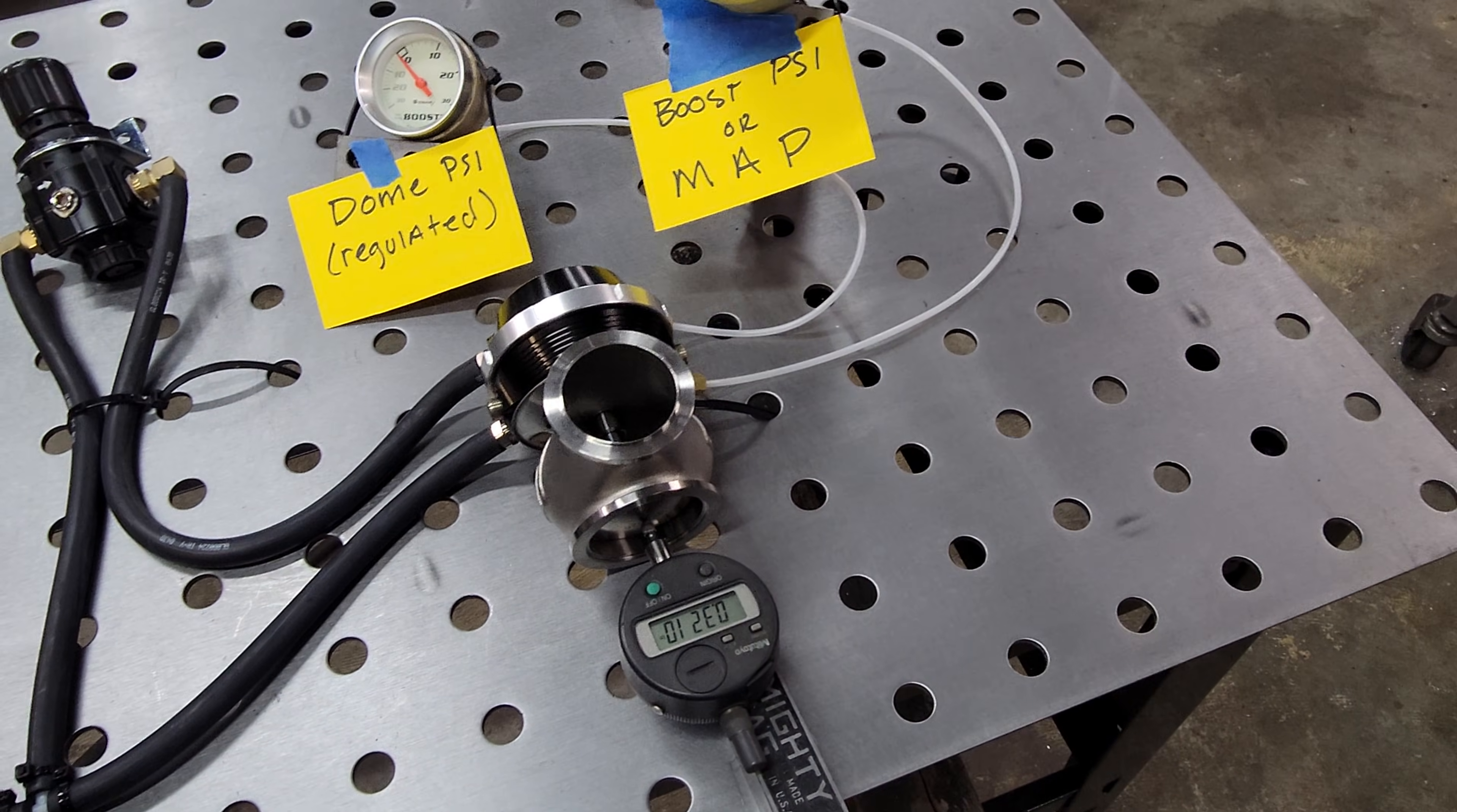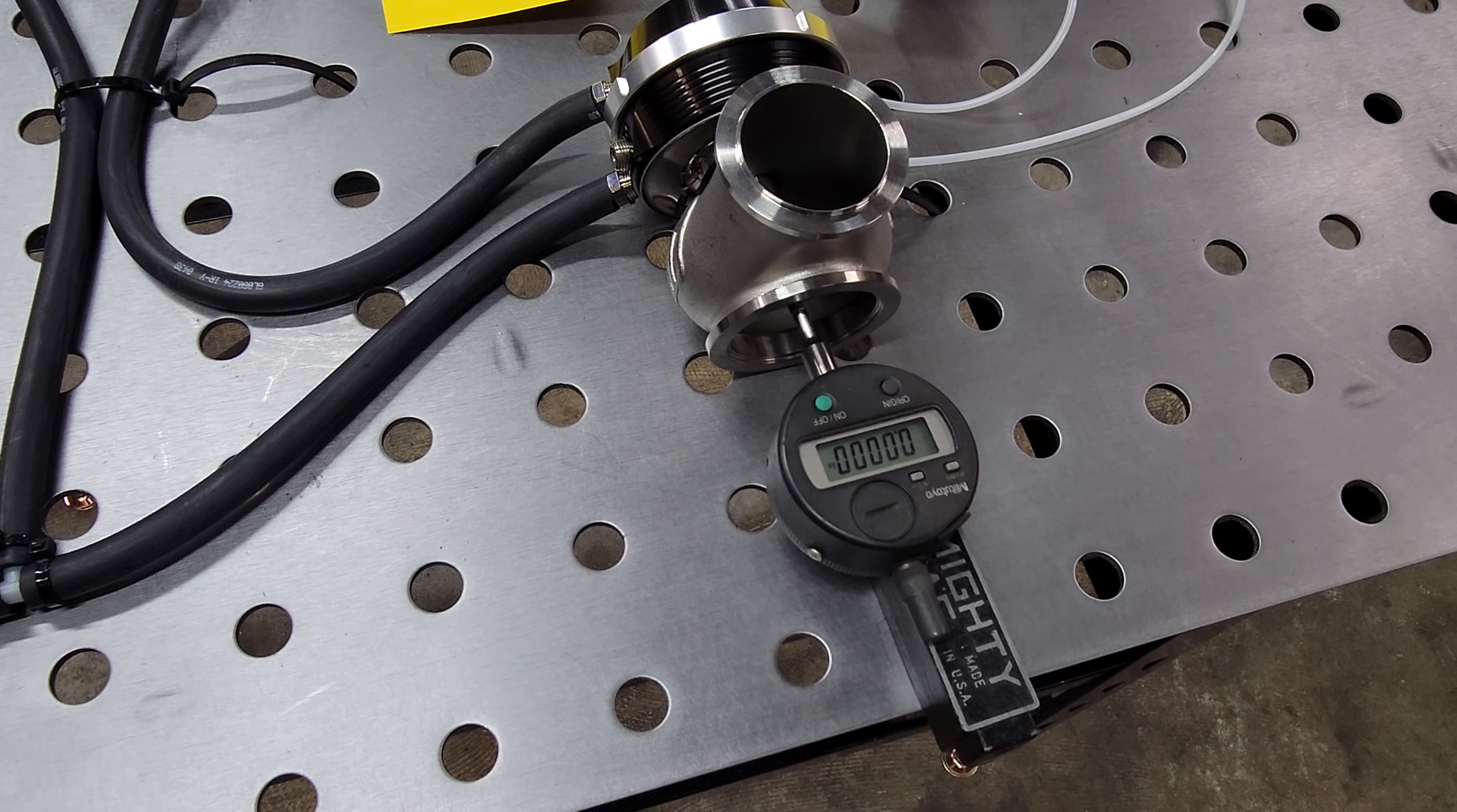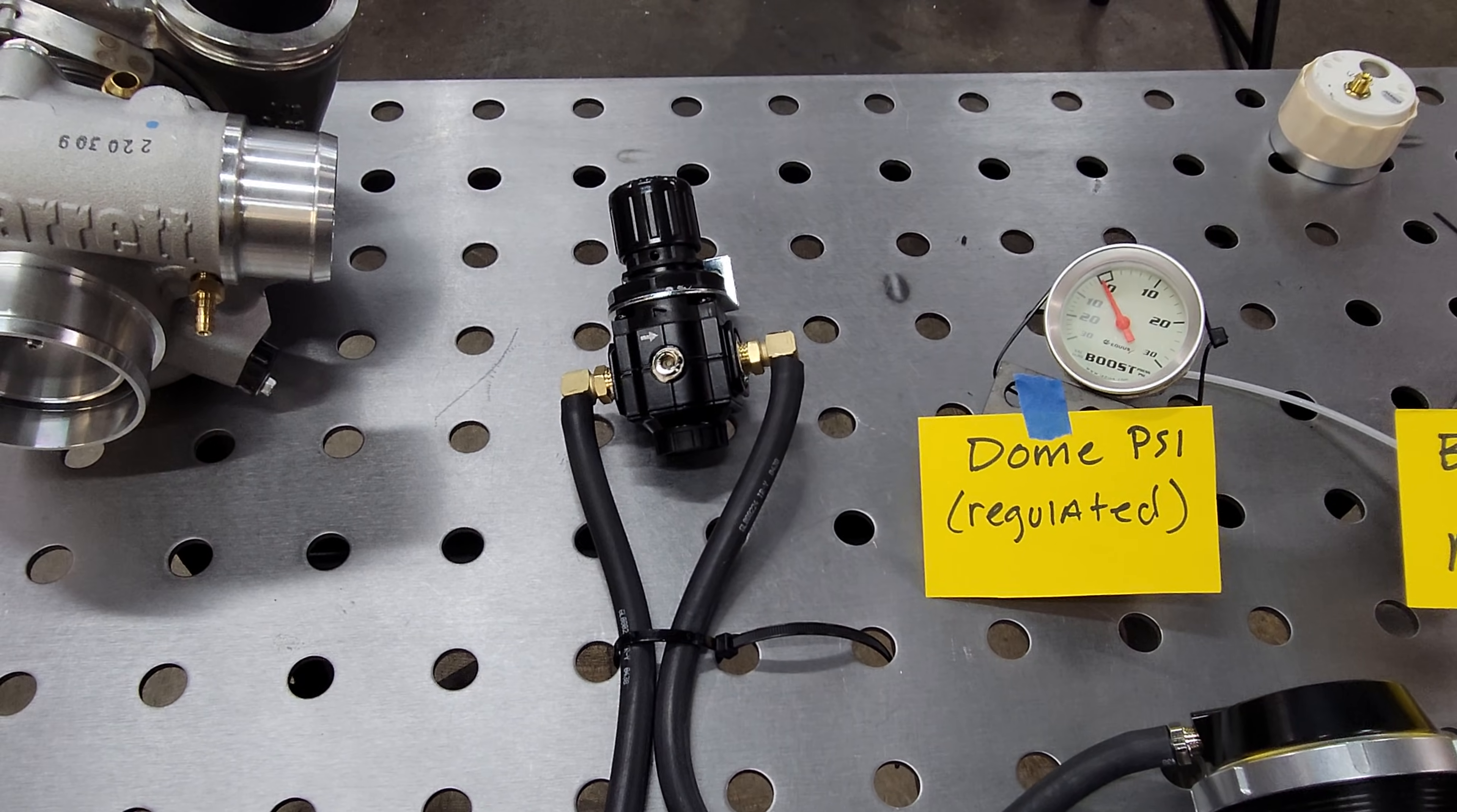I think I can get both of them in one shot there. Probably should have picked a better indicator with a dial on it instead of digital, but, hey, this is what we got. Alright, so at this point, props to TurboSmart on how accurate that is. It's repeatable, literally within thousandths of an inch for pressure. That's pretty good.